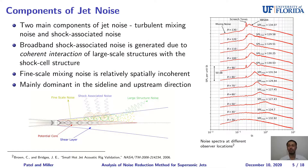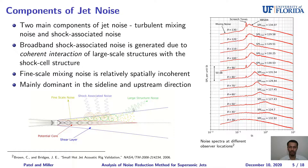Now I'll briefly discuss different components of jet noise. Jet noise can be decomposed into two main components: turbulent mixing noise and shock-associated noise. The turbulent mixing noise can be further decomposed into large-scale and fine-scale turbulent mixing noise, and shock-associated noise can be further decomposed into broadband shock-associated noise and screech tones. The directivity of different components is shown in the schematic diagram at the bottom of the slide, and the spectrum of different components in terms of sound pressure level per unit Strouhal number versus Strouhal number is shown in the plot on the right-hand side.